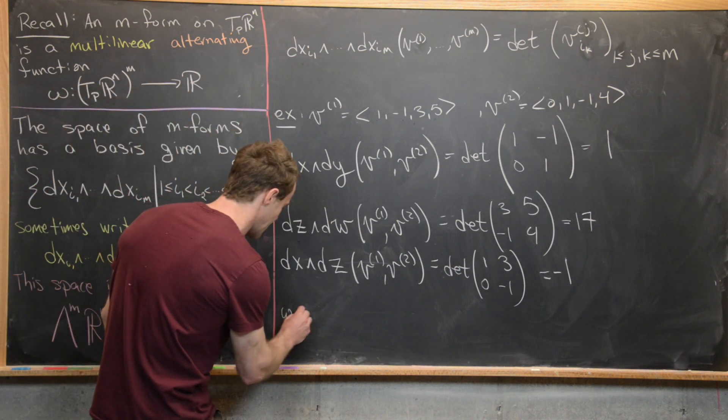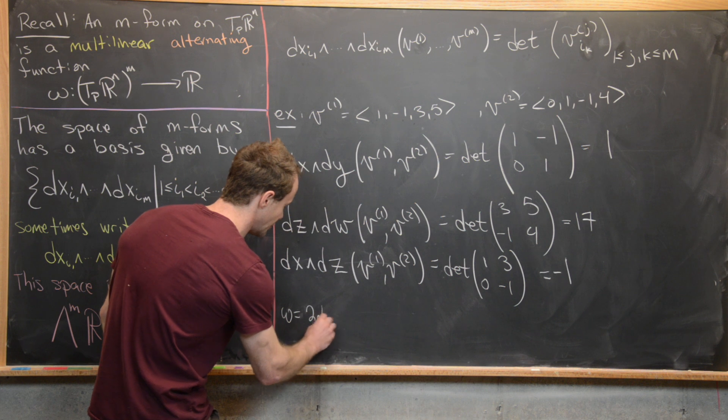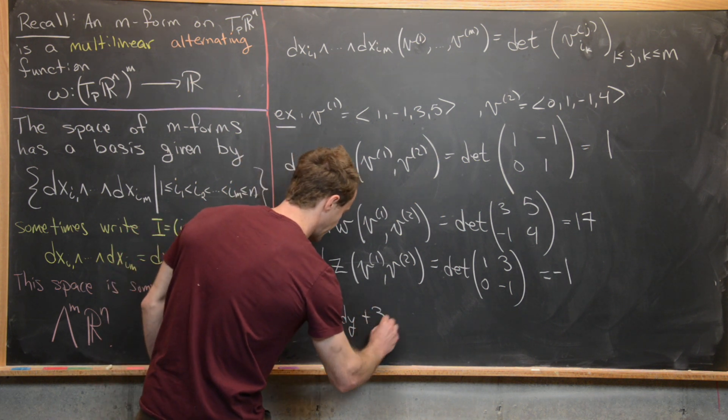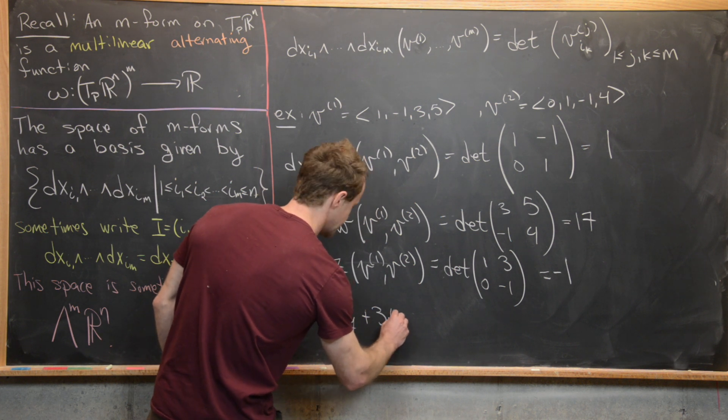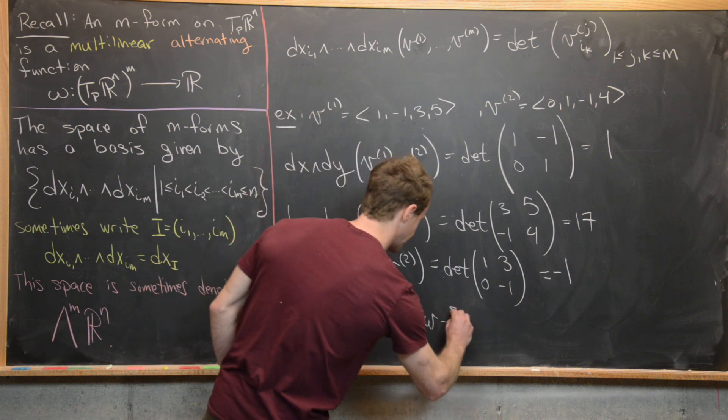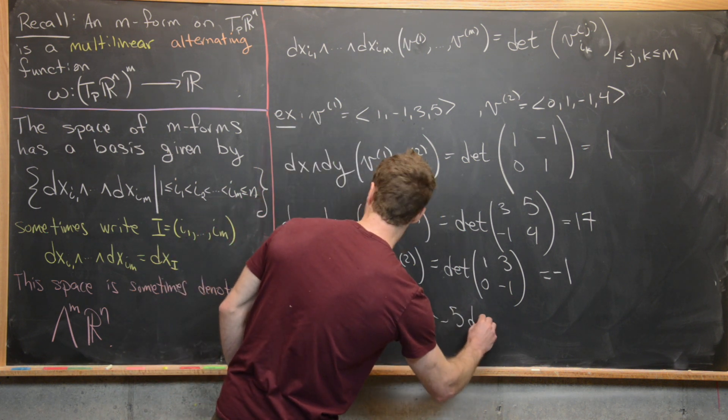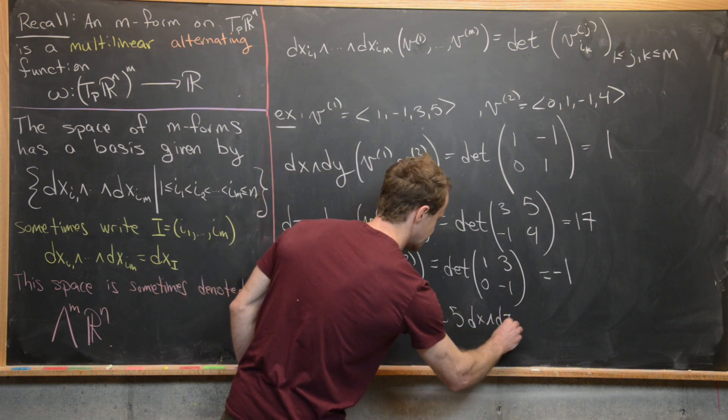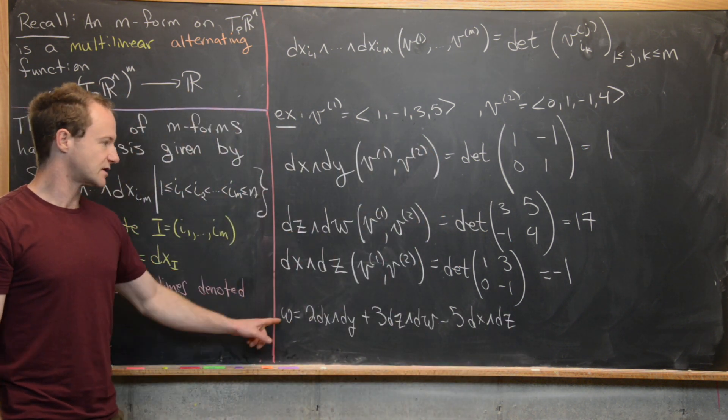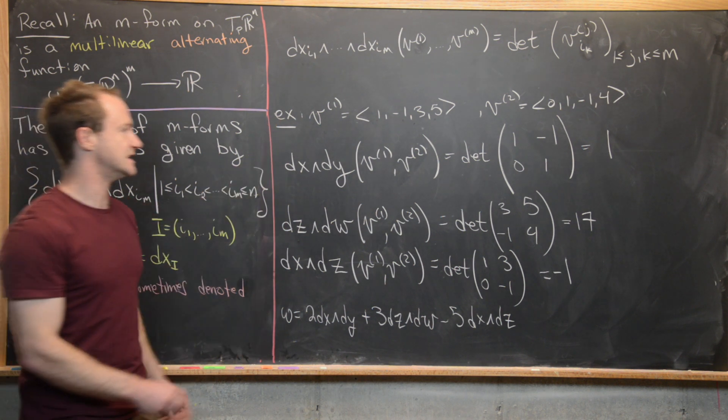But let's say that we have omega, which is equal to 2 DX wedge DY plus 3DZ wedge DW and then minus 5DX wedge DZ. And so that's going to be a linear combination of these three.